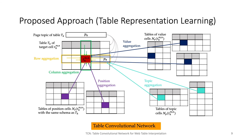The framework of our proposed approach, which we call the Table Convolutional Network, is shown in this figure. The proposed model is mainly composed of two big components or five small modules. The intra-table aggregation component is used to summarize contextual information inside the target table, and it includes the row aggregation module highlighted in yellow and the column aggregation module highlighted in green. The inter-table aggregation component is responsible for aggregating contextual information from other tables, and it is composed of the value aggregation module in blue, the topic aggregation in cyan, and the position aggregation in purple. I will present details on each aggregation module one by one.